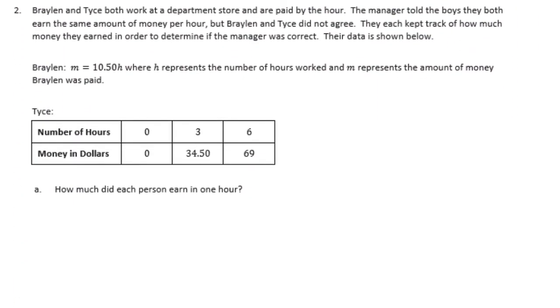Number 2. Braylon and Tice both work at a department store and are paid by the hour. The manager told the boys they both earn the same amount of money per hour, but Braylon and Tice do not agree. They each kept track of how much money they earned in order to determine if the manager was correct. Their data is shown below. Braylon makes, so M, the amount of money that he makes is 10.50H, where H represents the number of hours, and M represents the amount of money he was paid. So he's making 10.50 an hour. So we know that Braylon, we don't have to do much with that there, makes 10.50 per hour.